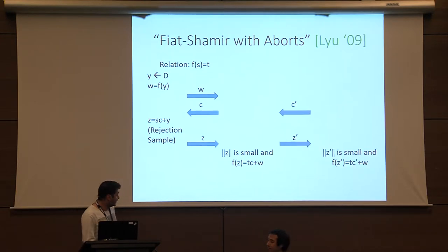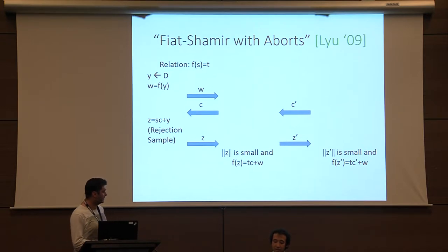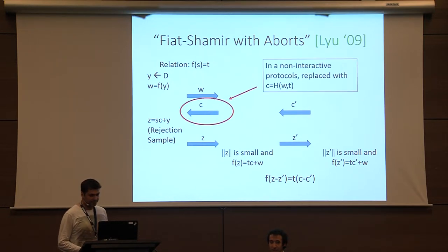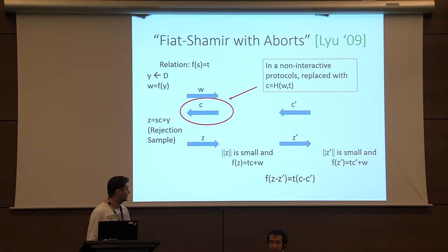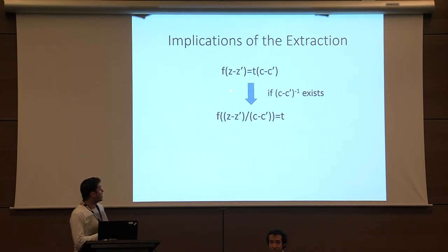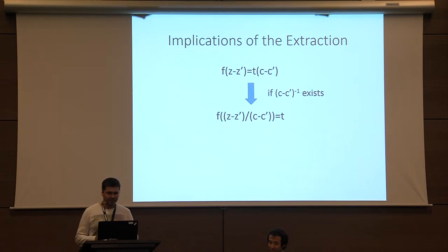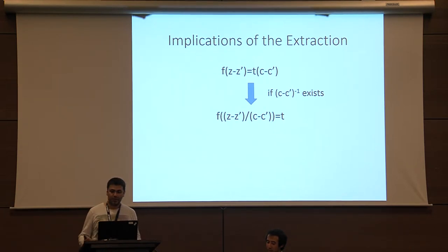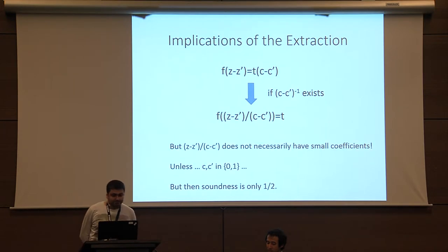The security proof works by rewinding: why is this proof of knowledge? Because you rewind, send a different C', the prover sends a different Z', you get another equation f(Z') = TC' + W, you subtract, and end up with f(Z - Z') = T(C - C'). If you're working with discrete log, you're done — just divide by C minus C'. Unfortunately with lattices you cannot do this. You can make it non-interactive via the Fiat-Shamir heuristic. In lattices, you can't divide by C minus C': first, the inverse may not exist since we're over a ring, not a field. The bigger problem is the quotient (Z - Z')/(C - C') — there's no reason why it should have small coefficients. Z has small coefficients, C has small coefficients, but the quotient will not.